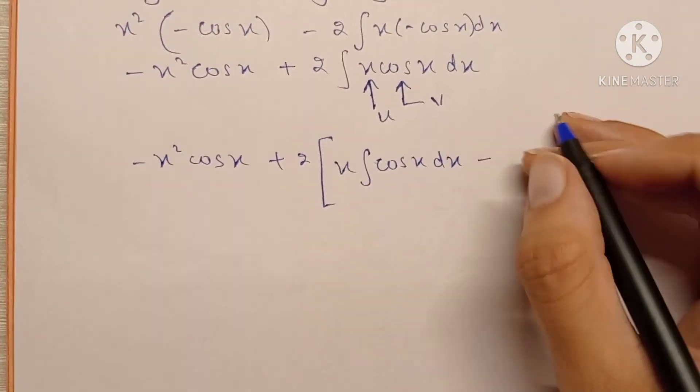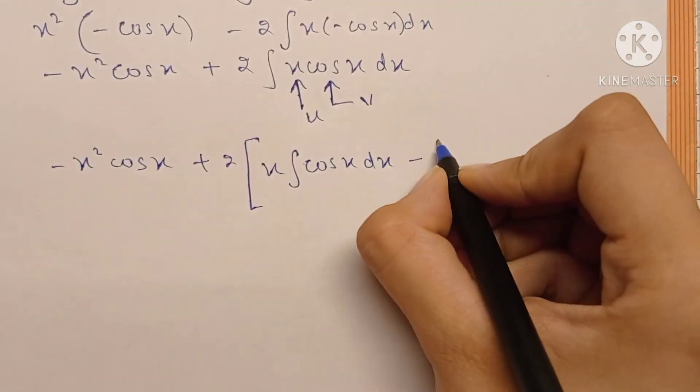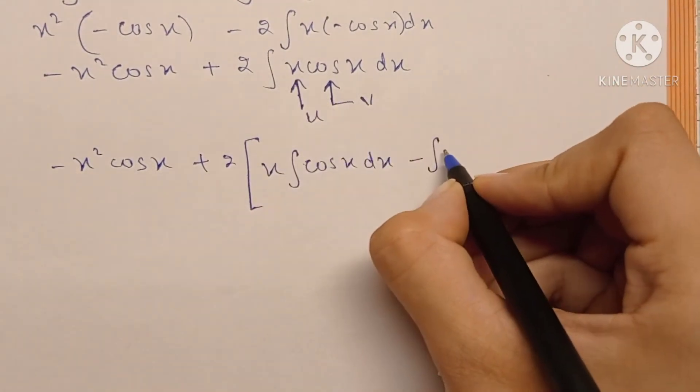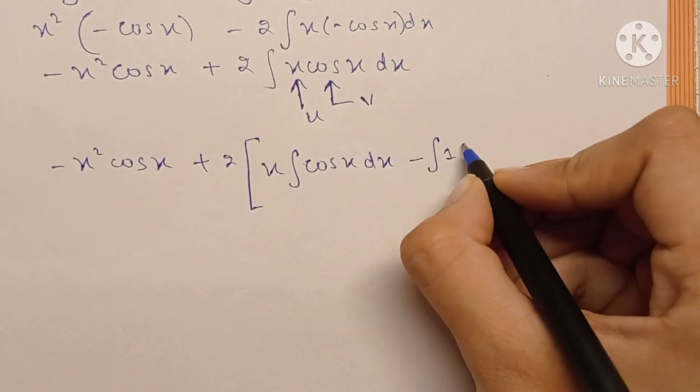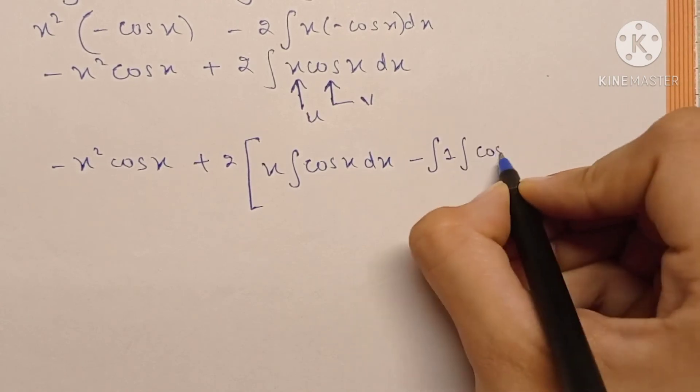V minus—differentiation of u is one here because differentiation of x is one, so let's not write that. We can just write it and write double integral, double integral cos x.